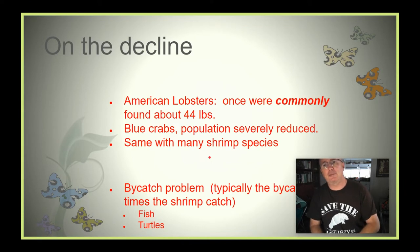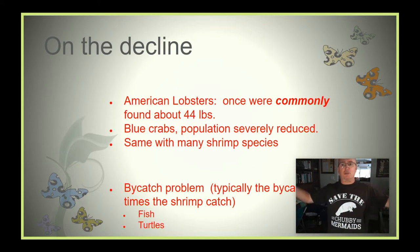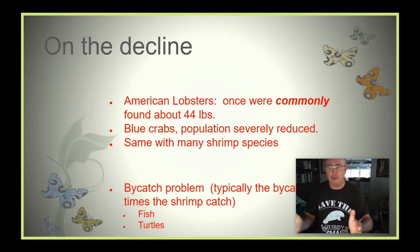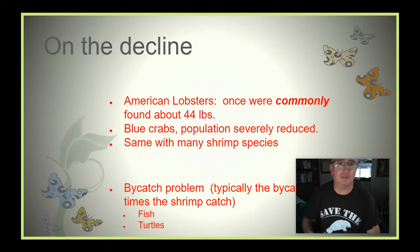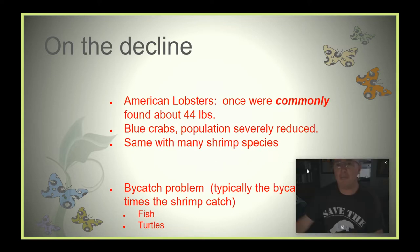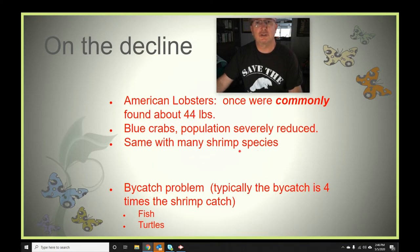Let's talk about the American lobster. They used to be really common and could get up to 44 pounds. Now a one- or two-pound lobster is what you find in most restaurants. Blue crabs are also severely reduced, as are many shrimp species. Another problem with these fisheries is the bycatch problem, mainly with shrimp species — shrimpers use big nets dragged along the bottom, trapping swarms of shrimp.